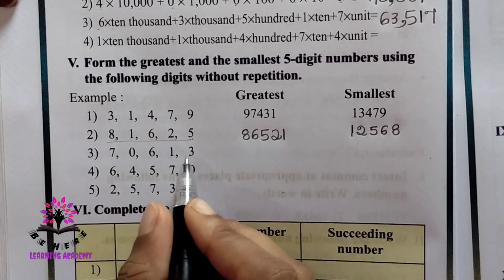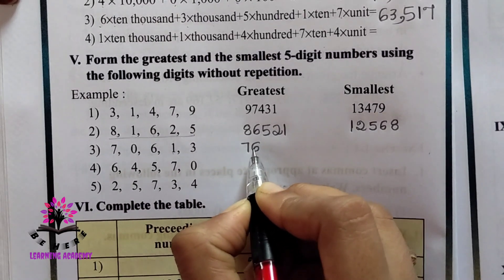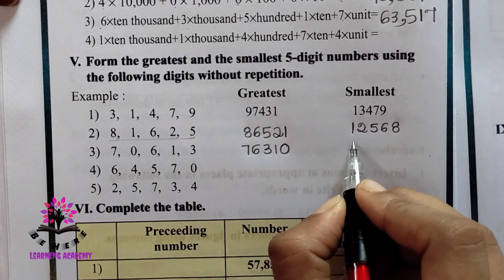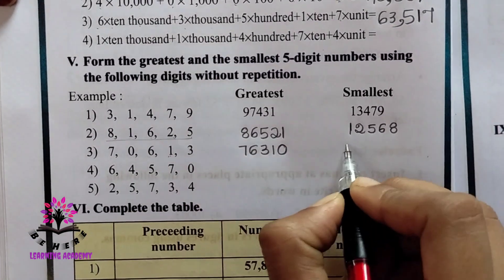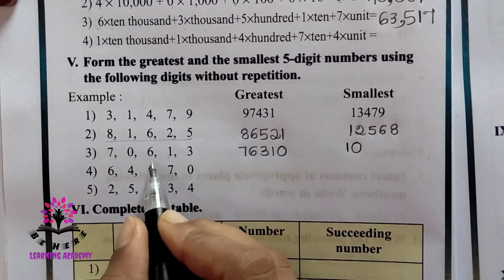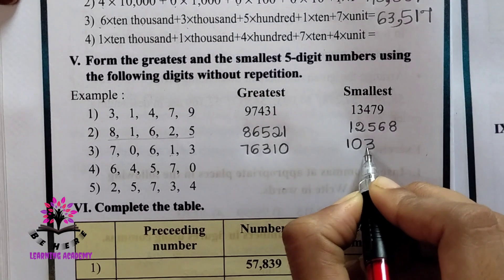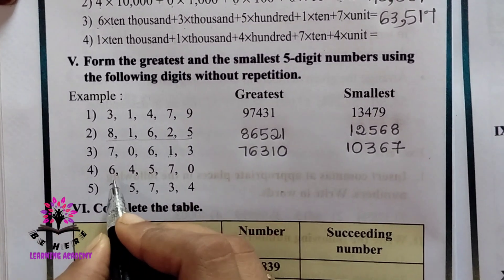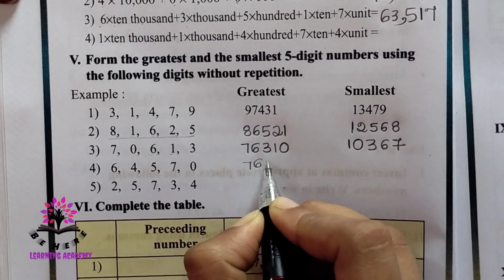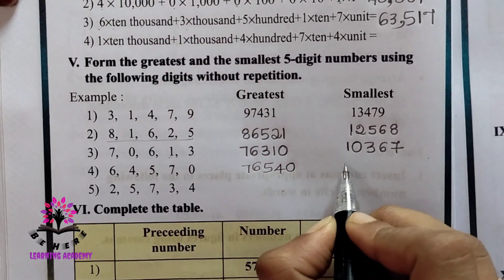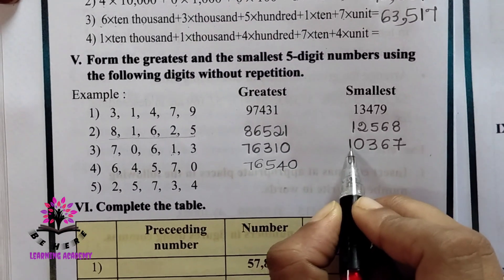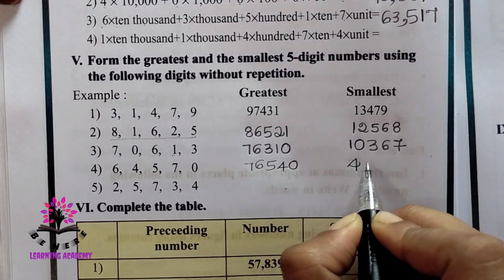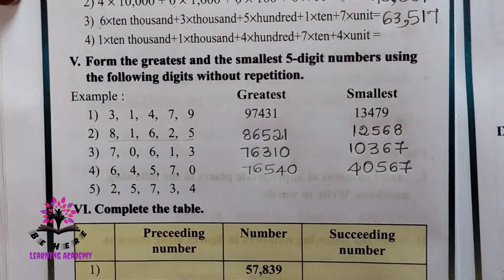Next set: digits 7, 0, 6, 1, 3. Greatest number is 76,310. We cannot write 0 in the first digit position, so for the smallest number start with 1, then include 0 next: 10,367. For digits 7, 6, 5, 4, 0: greatest is 76,540. We cannot write 0 first, so for smallest write 4 first then 0: 40,567. Try the last one by yourself.